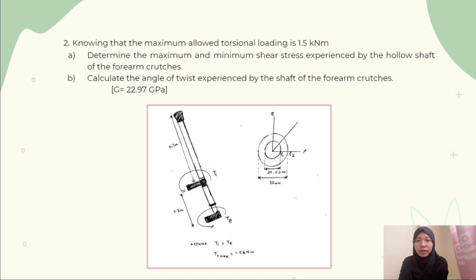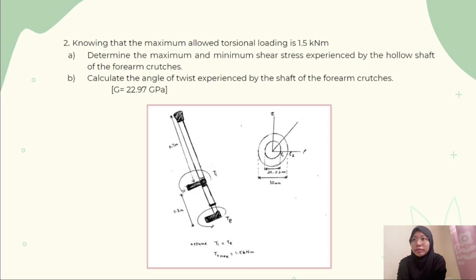My name is Anastasia Pintipal Manasek, matric number IAB190002. Now we are going to look at how to calculate the maximum and minimum shear stress, and also the angle of twist experienced by the hollow shaft of the forearm crutches. For the first question, we need to determine the maximum and minimum shear stress. The maximum allowed torsional loading has been given as 1.5 kN·m. From the figure, the internal diameter is 20.02 mm and the external diameter is 30 mm.